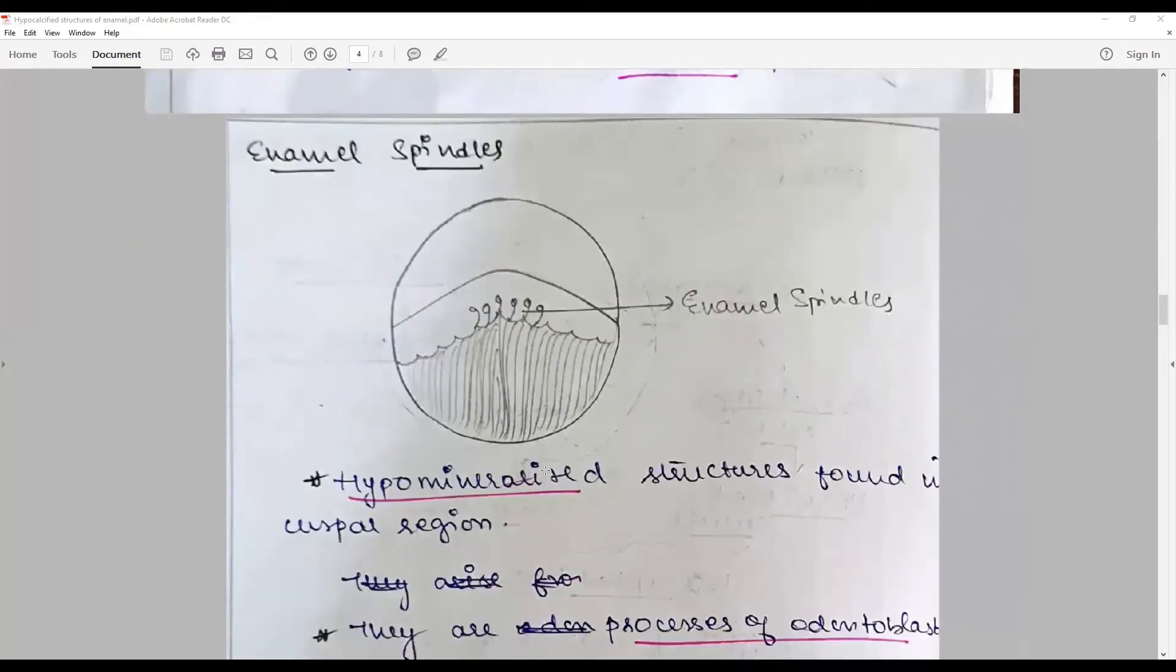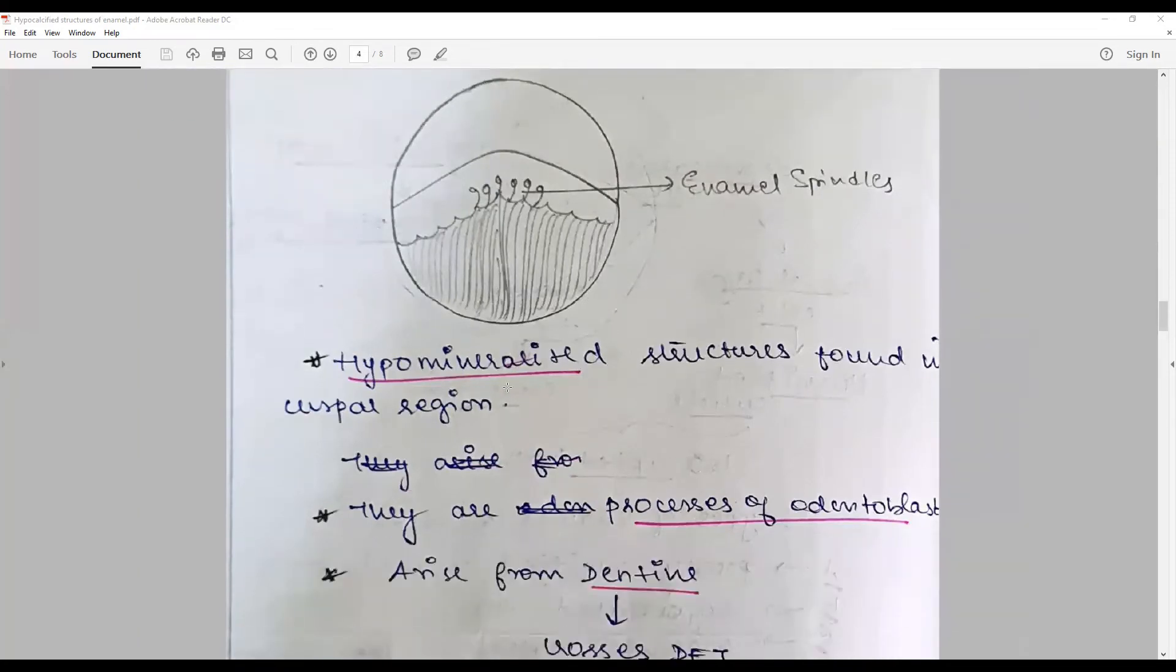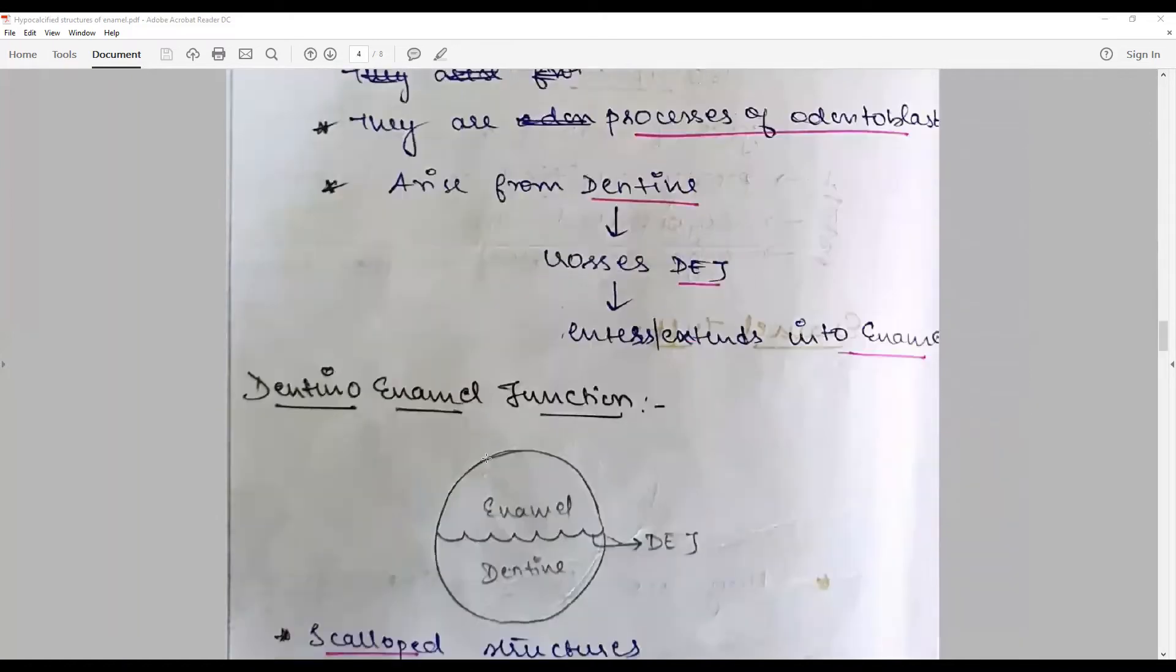Enamel spindles are hypomineralized structures found usually along the cuspal regions. They are the processes of odontoblasts arising from the dentin and extending into various lengths into the enamel rods.